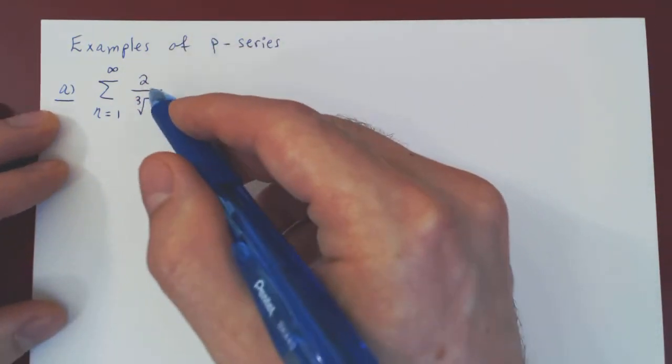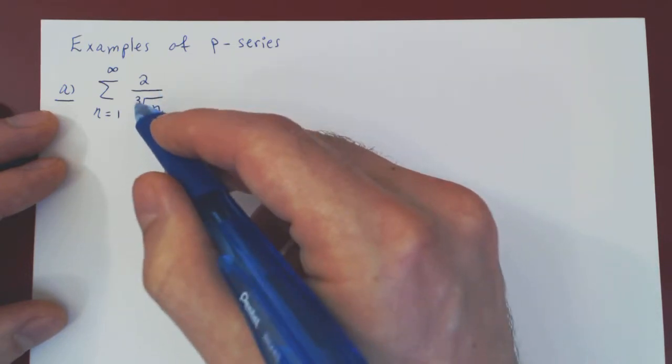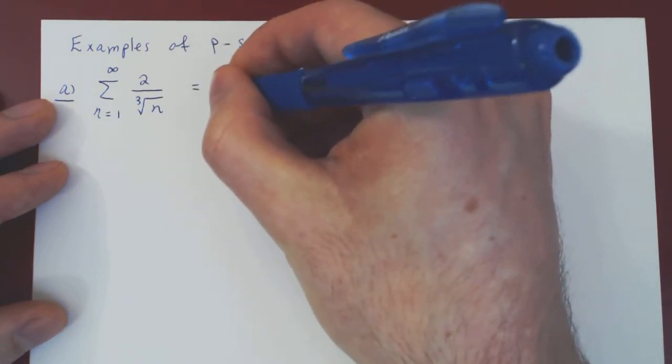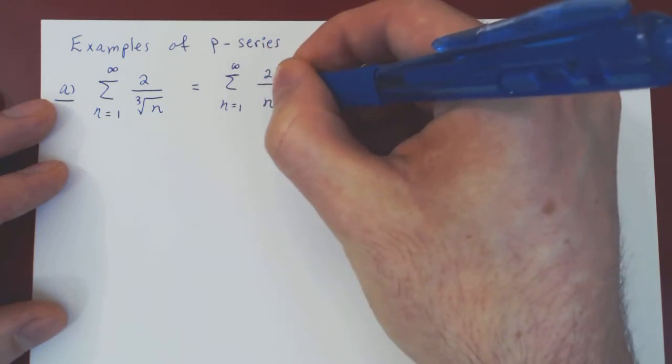The first thing that's annoying here is that we don't seem to have just 1 over n to a power. We have the cube root of n. The first step we can do is we can rewrite the cube root as, of course, n to the power of 1 over 3.